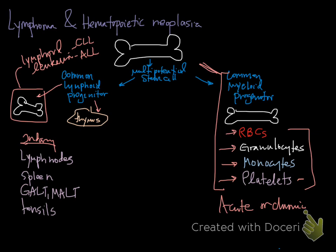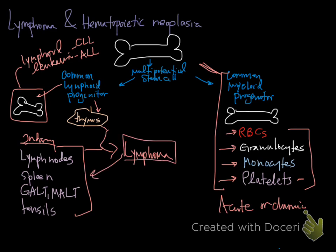When neoplastic lymphoid cells come from the thymus or secondary lymphoid organs, that is termed lymphoma. Lymphoma typically starts outside of the marrow and spreads from there. Dr. Durham likely covered the types of lymphoma in the systemic pathology course; here we'll focus on how it impacts blood work. Lymphoma can remain in the periphery or spread to the marrow, and when it spreads to the marrow that's stage five — visible in blood. Stage five lymphoma can be very difficult to differentiate from ALL because both involve immature lymphoid cells, which we call lymphoblasts.